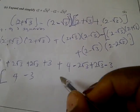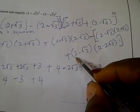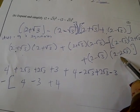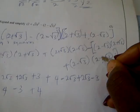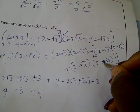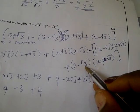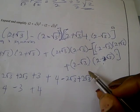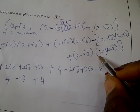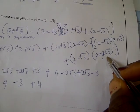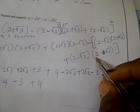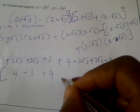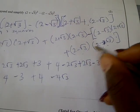Let's do it this way to make everything easier: 2 times 2 is 4, plus 4. For (2 − √3) into (2 − √3): 2 times 2 is 4. Then 2 times negative √3 is minus 2√3. 2 times this is minus 2√3, so that's minus 4√3 altogether. And this times this is plus 3.